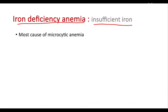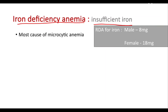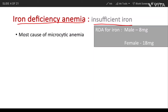First, we have to know the recommended dietary allowances for iron. This RDA for iron differs from male to female. Males require 8 milligrams, whereas females require 18 milligrams.